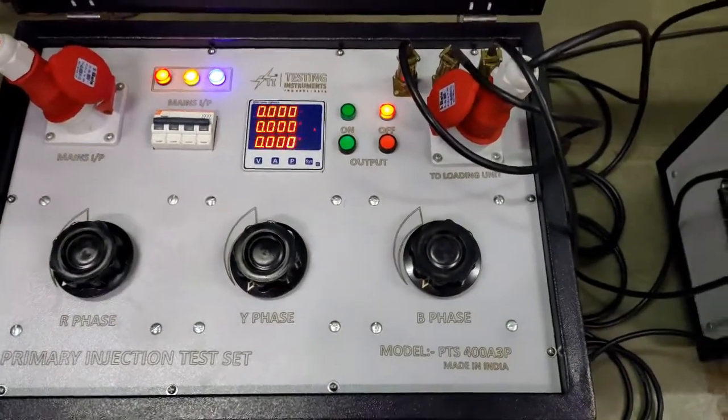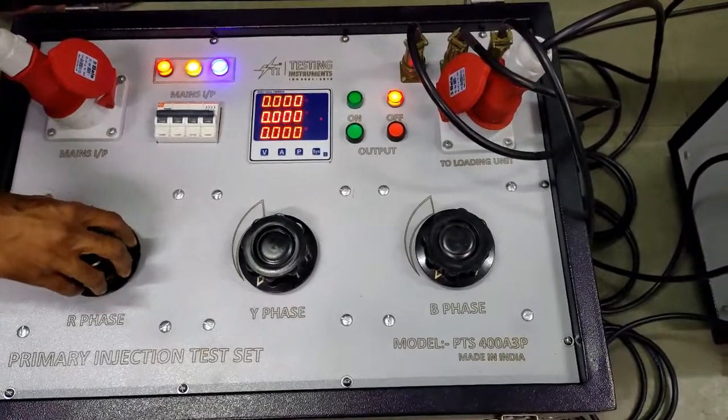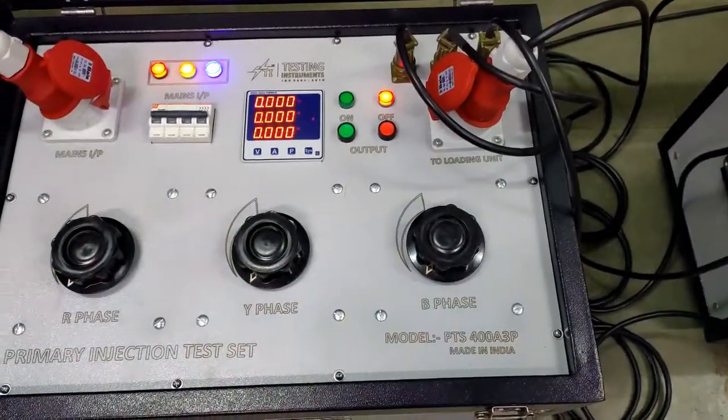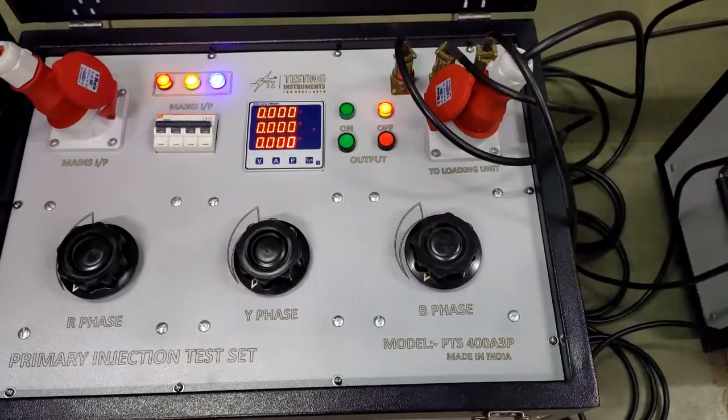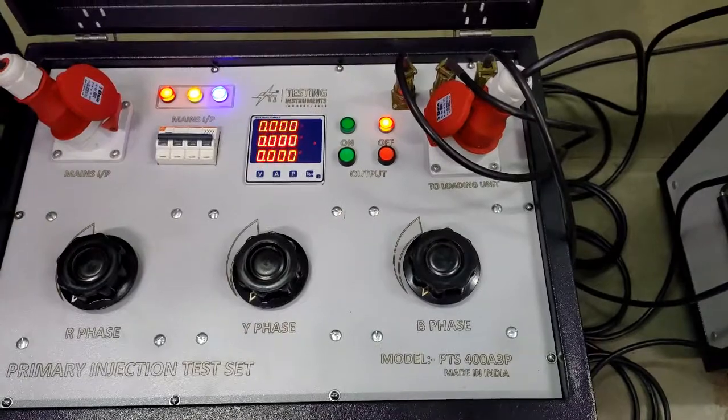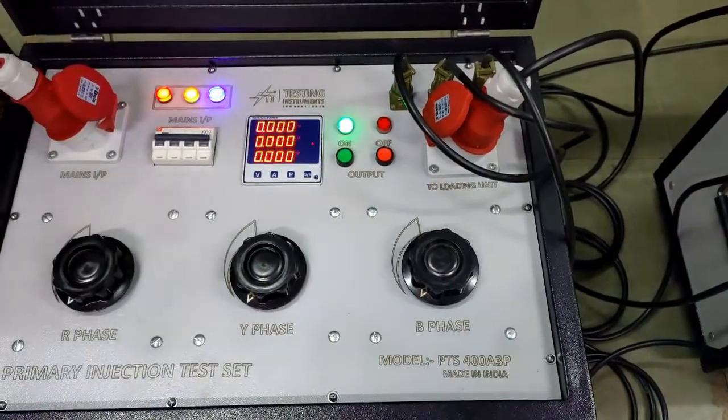As we are first time operating the instrument we will operate it from minimum position of ampere. So we will ensure that all three phase variac position is at minimum side. After ensuring minimum position, press test on green button and output will be switched on.